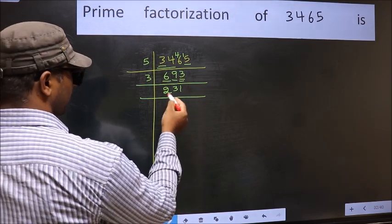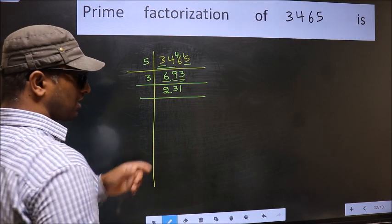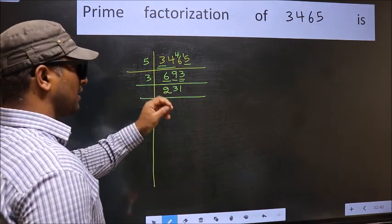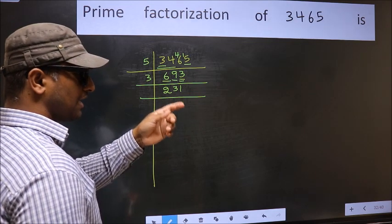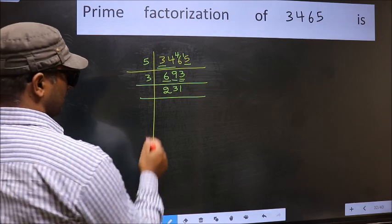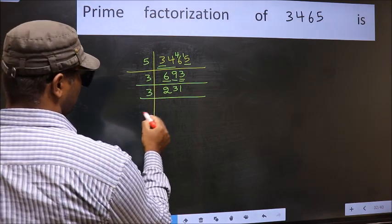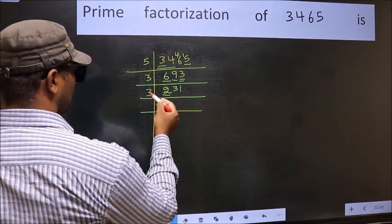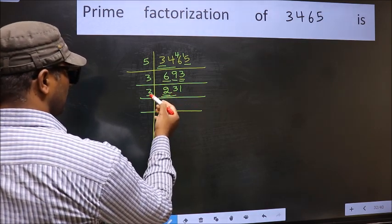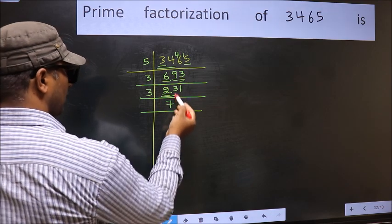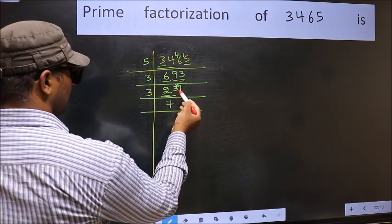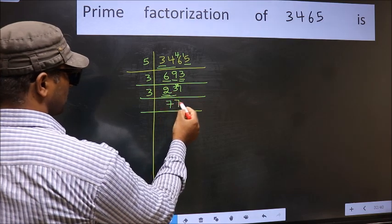Now to check whether it is divisible by 3 or not, add the digits. 2+3+1=6, and 6 is divisible by 3. So this number is also divisible by 3. So take 3 here. First number 2 is smaller than 3, so take 2 numbers, 23. A number close to 23 in 3 table is 3×7=21. 23-21=2, 2 carried forward makes 21. When do we get 21 in 3 table? 3×7=21.